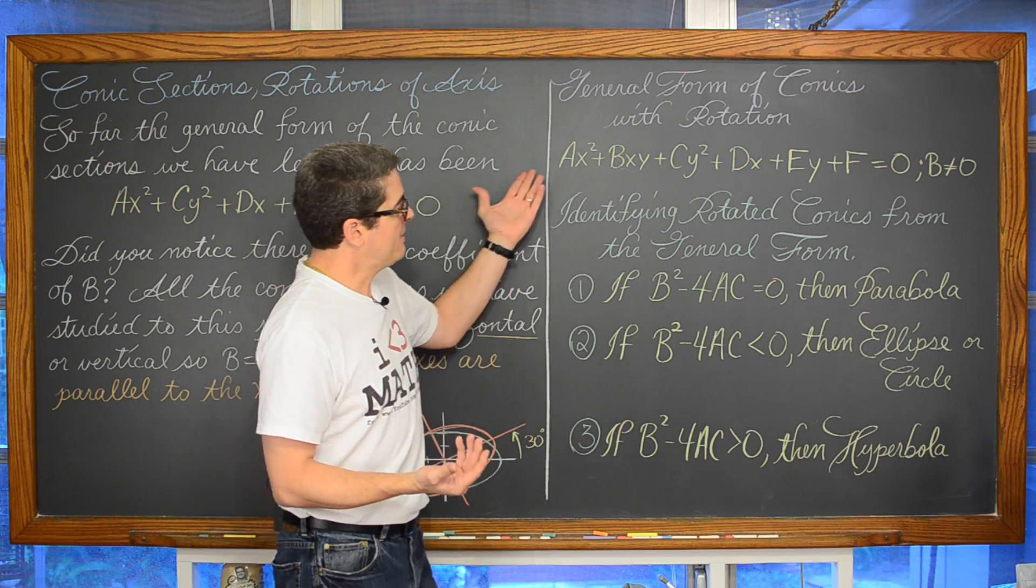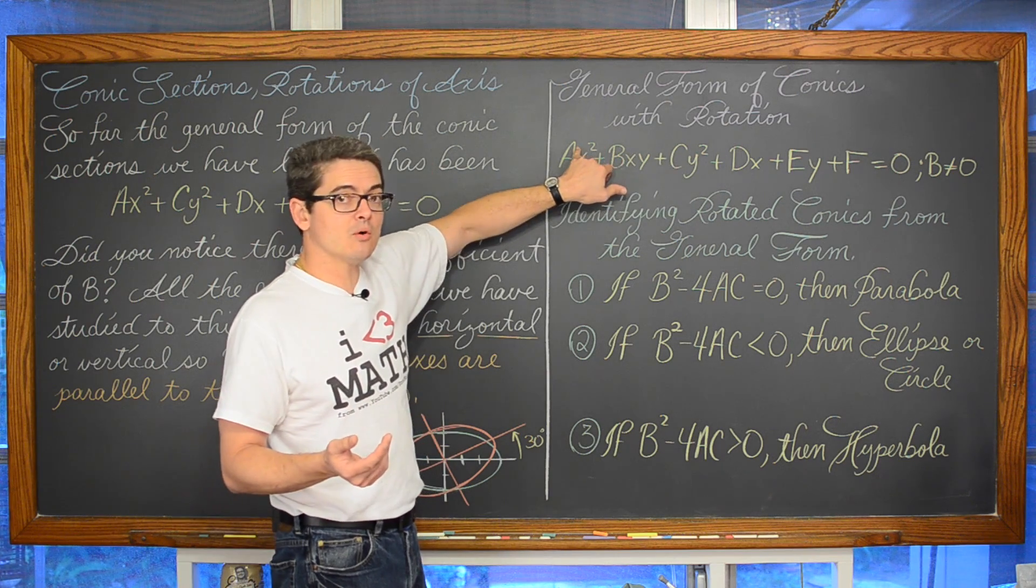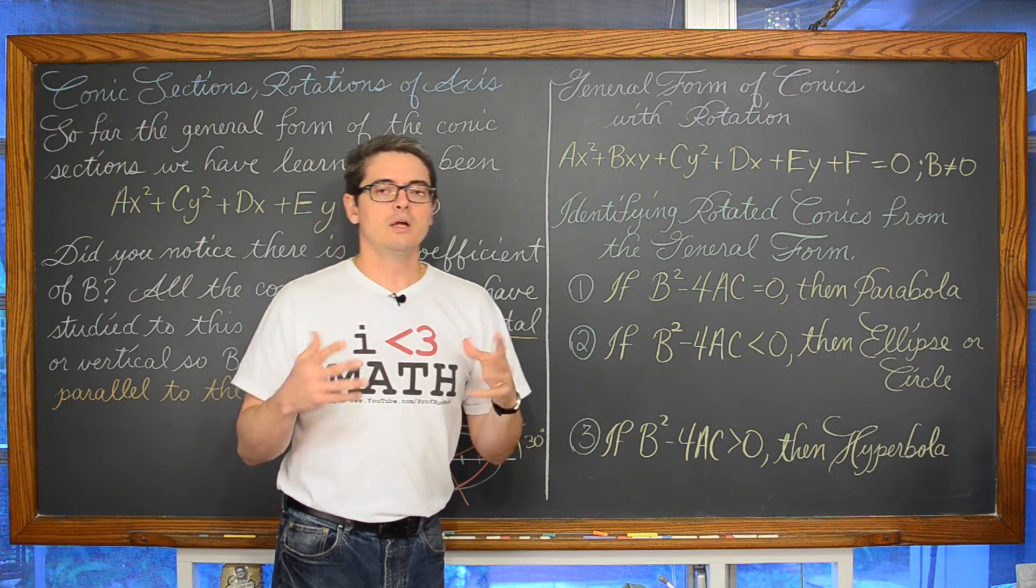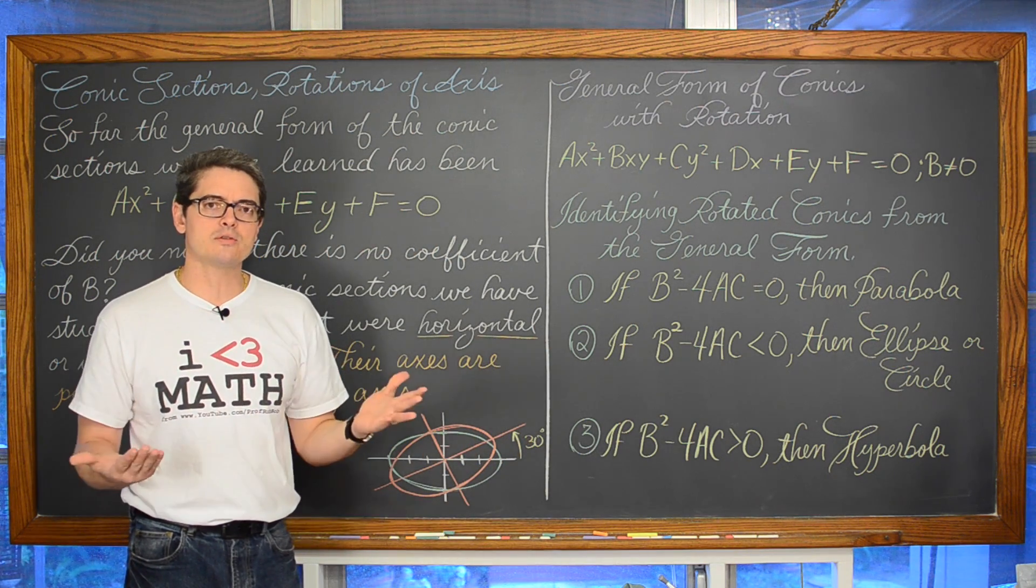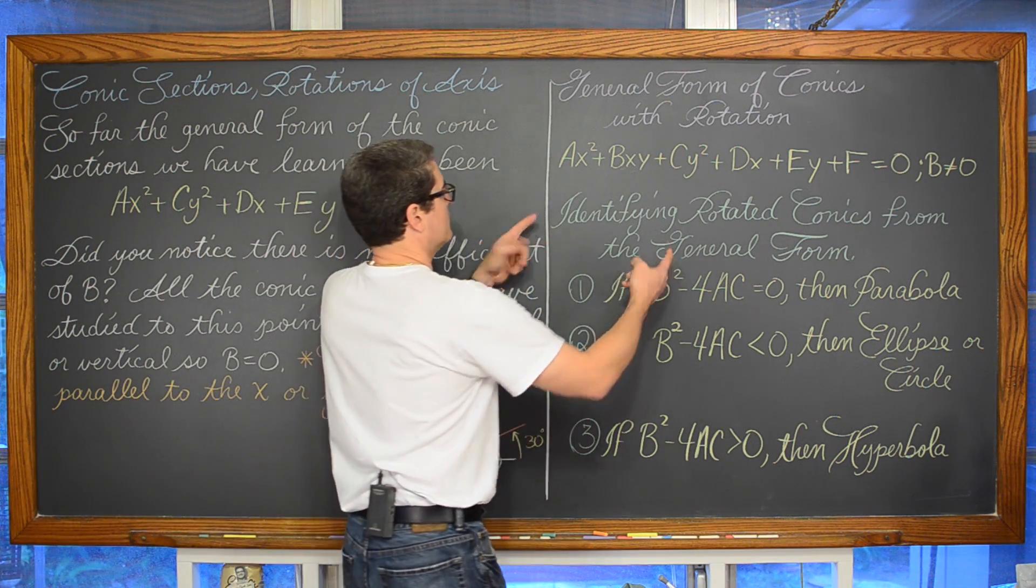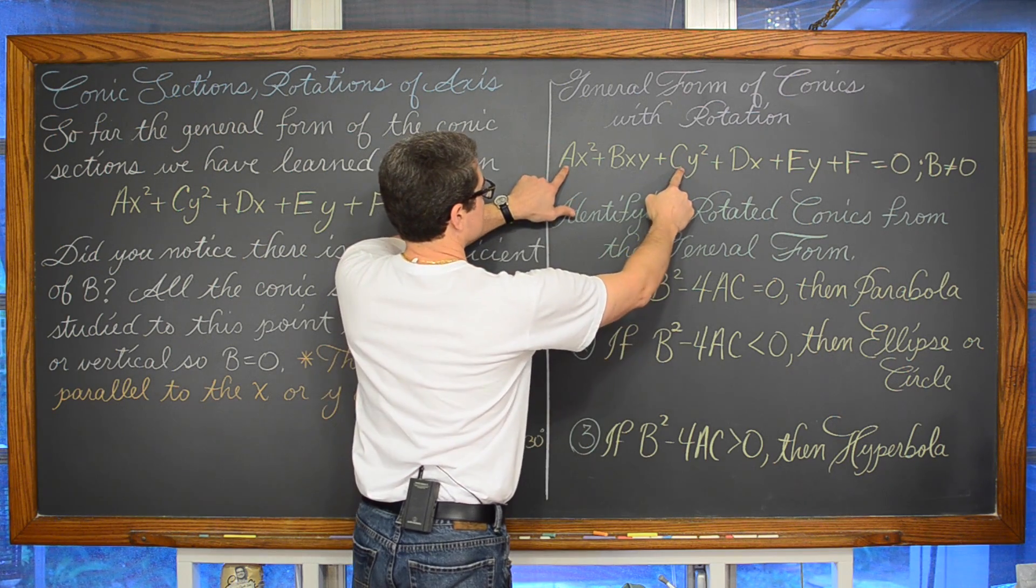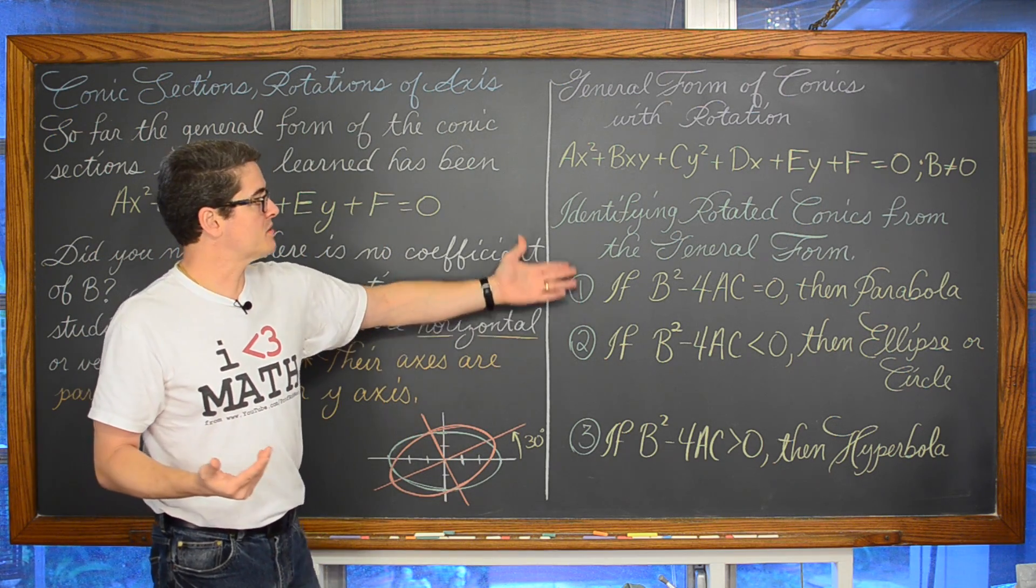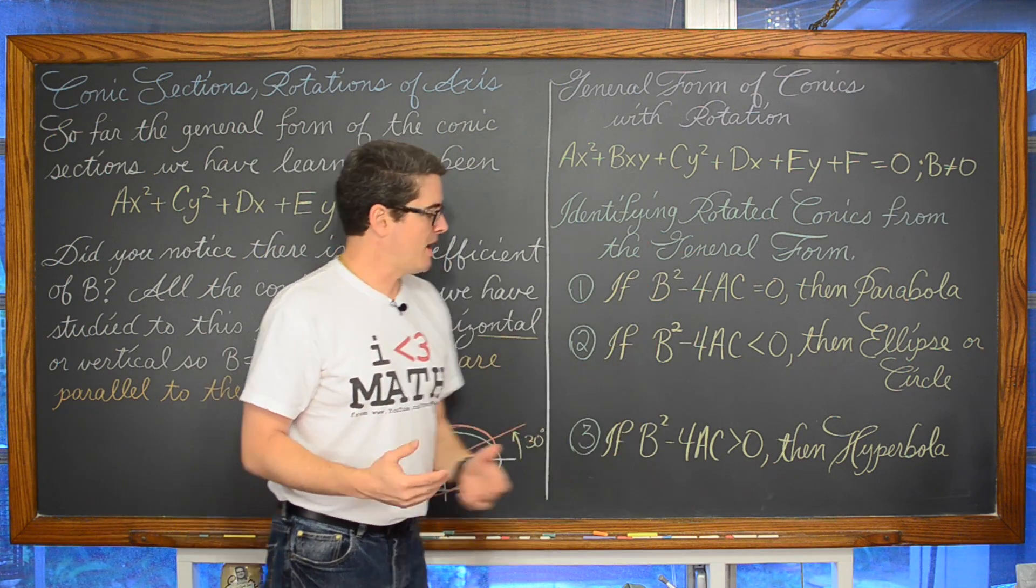So you can have a general form here with two squared terms but yet it be a parabola. That never happened with your non-rotated conic sections. If you had one squared term it was a parabola and if you had two squared terms then if these two coefficients both had the same sign then it was some form of an ellipse and if these two coefficients had different signs it was a hyperbola. But here you have a possibility of two squared terms, x squared and y squared and yet it is actually a parabola.